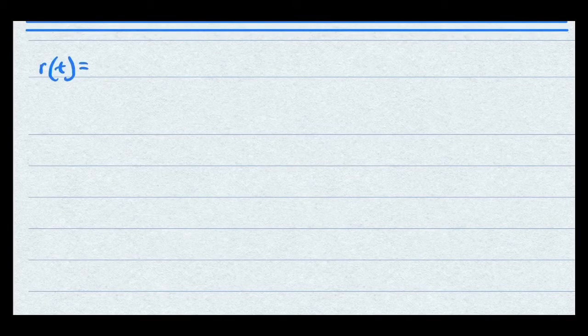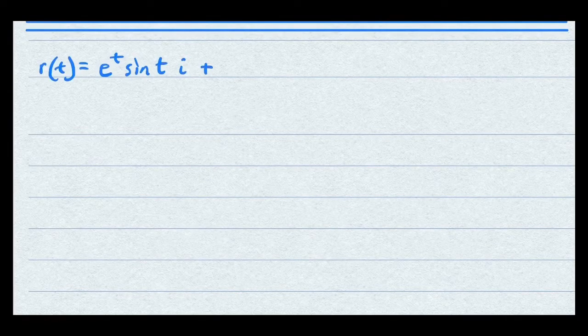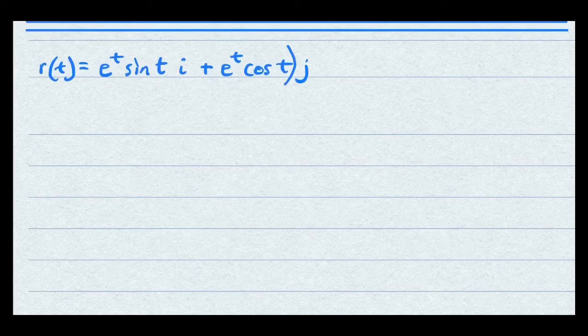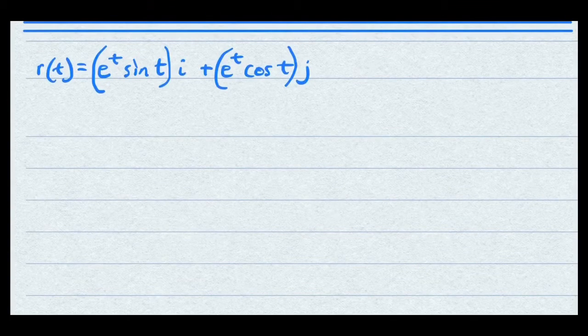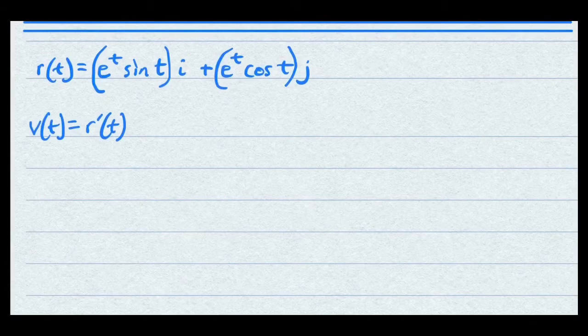Now let's try a slightly more difficult problem. We're still going to look for the velocity vector, the acceleration vector, and speed. This time, the position vector will be e to the t sine t i plus e to the t cosine t j. You can put parentheses around them to make it easier to see where to separate them. First, we're going to find the velocity vector again, and that's going to be the first derivative of the position vector. Notice how the component with i requires the product rule, so we're going to use the product rule right away.